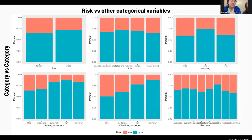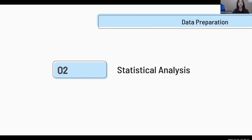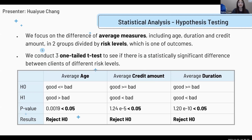We use stacked bar plots for categorical variables to visualize risk versus other categorical variables. From the plots, each categorical variable's risk level varies to some degree. In conclusion, we have three numerical variables and seven factors for our EDA, and we are not going to drop any variables. Moving to our statistical analysis, we conducted hypothesis testing and multiple testing, focusing on the difference of average measures in two groups divided by risk level, as risk level is one of our outcomes.